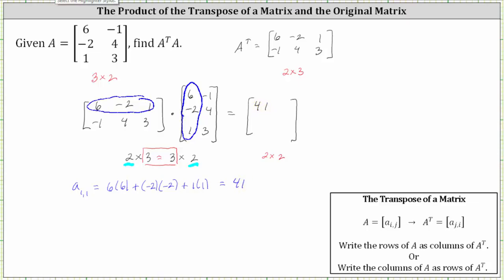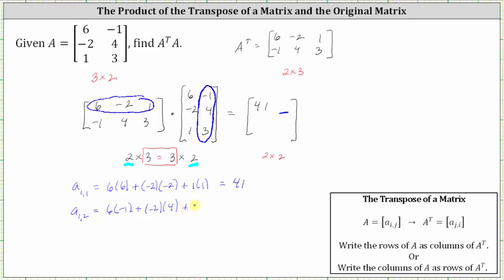Now to determine the element in row one, column two, we multiply row one from the first matrix and column two of the second matrix. Notice how the position of the element in the product indicates which row we use in the first matrix and which column we use in the second matrix. A sub one comma two is equal to six times negative one plus negative two times four plus one times three, which gives us negative six plus negative eight, which is negative 14 plus three, which is negative 11.